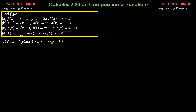Then, 2 times (x minus 1) is substituted for x in f of x. So f of g of h is equal to 2 times (x minus 1) plus 1. Simplifying, we have 2x minus 2 plus 1, which is 2x minus 1. So f of g of h is equal to 2x minus 1. That's it for part a.